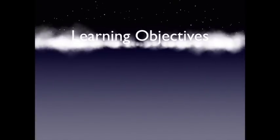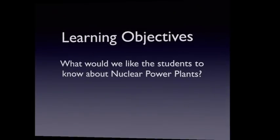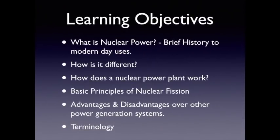To begin to look at nuclear power plants, we need to set out some clear objectives. The basic objectives are to find out what nuclear power is, from a brief history of how it was formed to how it's used in modern days. We need to find out how it differs from other power sources, how the nuclear power plant itself works — involving the basic principles of nuclear fission — and to look at the advantages and disadvantages over other power generation systems, finishing with some terminology used in nuclear power plants.